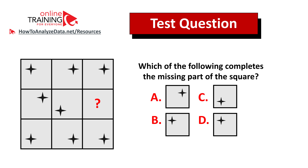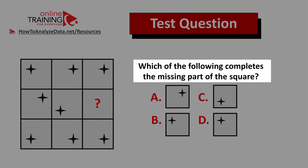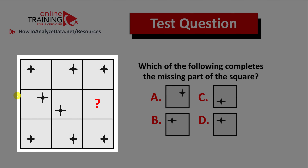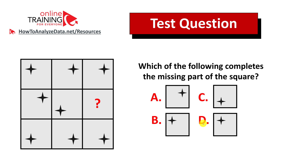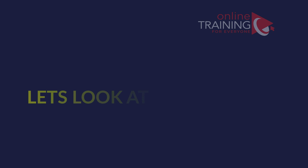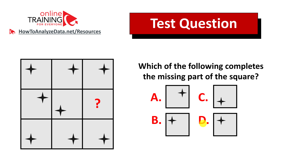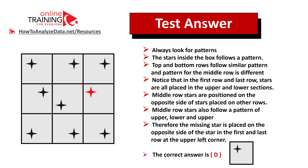Here's another tricky question from the test: which of the following completes the missing part of the square? You have a three by three square consisting of smaller squares. Each small square has a star, and all stars are in different corners. One small square is missing, and you have four choices — A, B, C, and D — each with a star in a different corner. Give yourself 10 to 20 seconds.